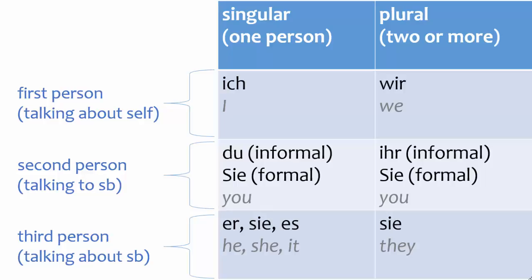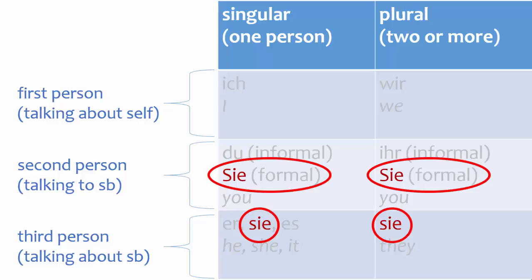Uppercase Z is a second-person pronoun, like the English you. Lowercase Z is a third-person pronoun, like the English she or the English they.